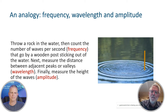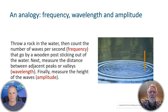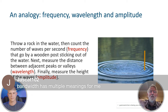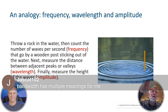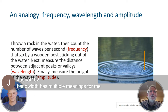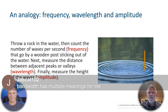Now understand that ripples on a pond propagate in a more three-dimensional way than it appears on the surface. That same concept applies to electromagnetic waves propagating through the air — like light or radio waves — except now throw in the fact that there's an electric component and a magnetic component that are orthogonal to each other. That makes it really difficult to visualize what's going on with those waves zipping along through the air.